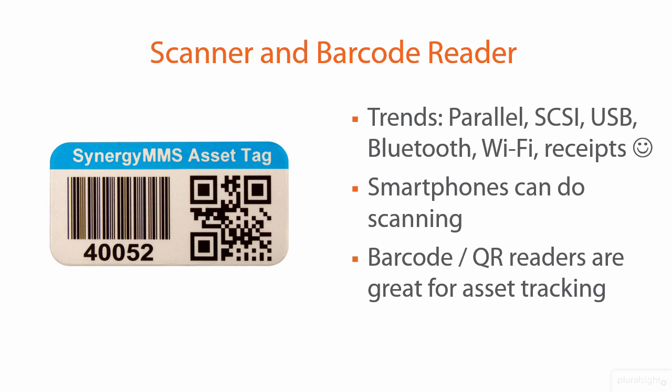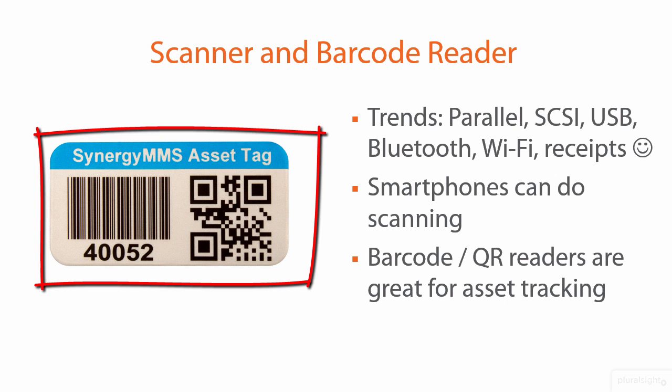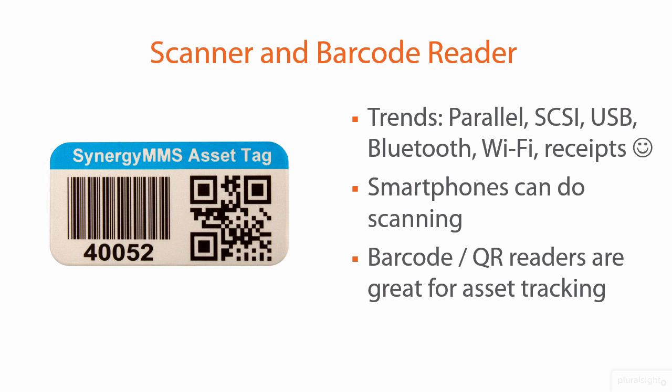QR codes can also serve as excellent IDs for asset tagging. This asset tag at left includes both a barcode and a QR code. It also provides a level of confidentiality for the business because there's no human-readable text. Between the barcode and the QR code, you can find out everything about a particular asset. This is really the way to go for inventory management, especially in IT.